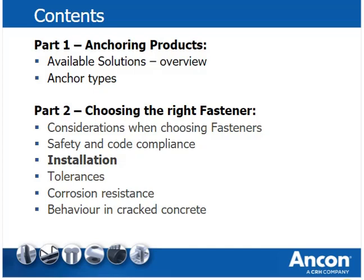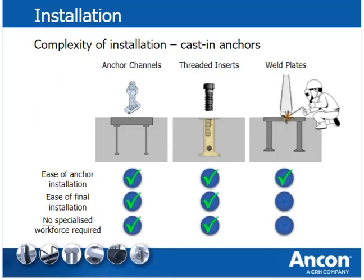The next slides discuss the complexity and speed of installation for common fastening methods. Cast-in anchors like anchor channels, threaded inserts and weld plates are very easy to install — fixed to the formwork before the concrete pour with the surface flush to the concrete. It is important that the concrete is soundly compacted around the fastener to avoid honeycombing. The final installation of attachments is very easy for anchor channels and threaded inserts, requiring only a torque-controlled wrench. Weld plates require welding on site, which can cause safety issues, slow down the building process, requires a certified welder and inspection. The engineer should confirm that welding is allowed on the particular job site.